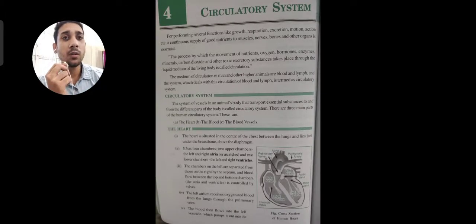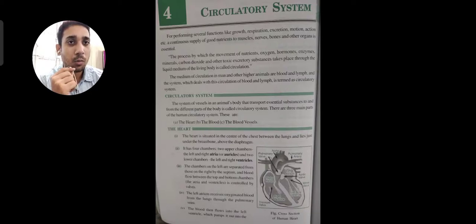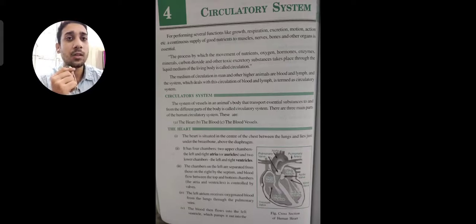Hello everyone, today we will start Chapter 4 - the Circulatory System. In this chapter we are going to learn about how blood flows throughout our body, how it carries all the minerals and nutrients, and also delivers oxygen, various hormones, and enzymes throughout our body.